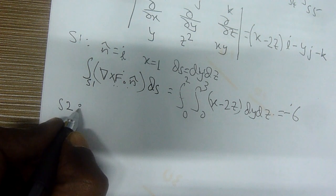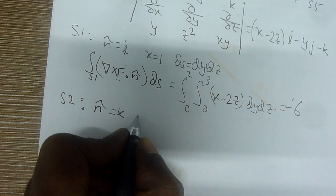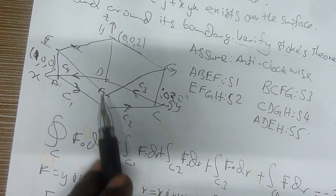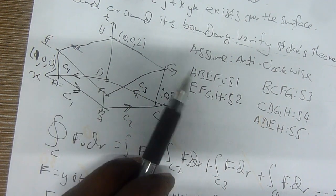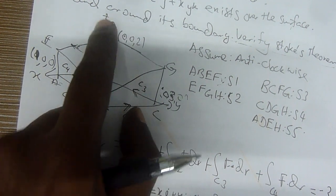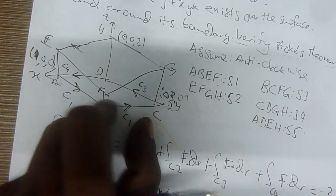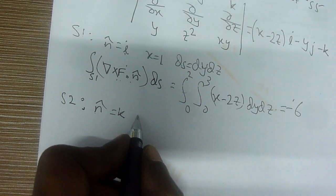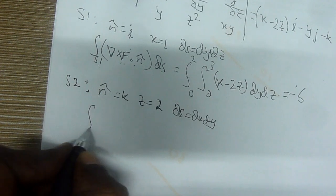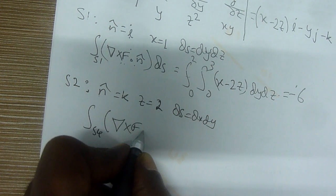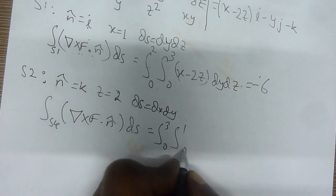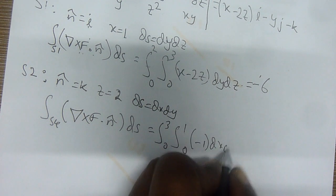Let us do S2. For S2, which is E, F, G, H — on the top — the normal is k, following the z direction, with fixed point z = 2, and dS = dx dy. I won't show everything, but you get negative 1 dx dy which equals negative 3.